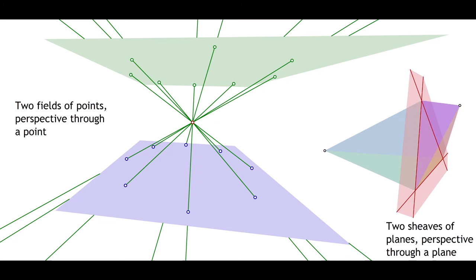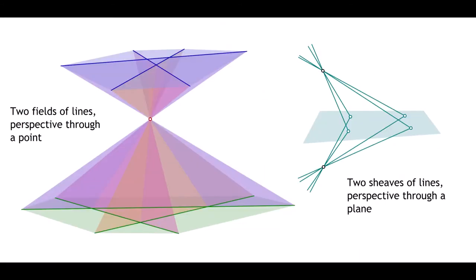You can also cast points in a plane by way of a perspective point, which meets them in lines, to points in another plane. Or cast planes in a point, by way of a perspective plane, which meets them in lines, to planes in another point. You can cast lines in a plane by way of a perspective point, which meets them in planes, to lines in another plane. Or cast lines in a point, by way of a perspective plane, which meets them in points, to lines in another point.